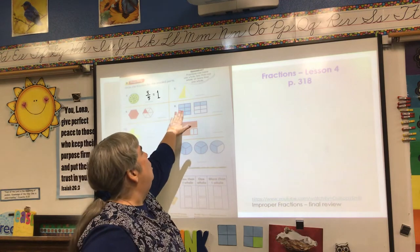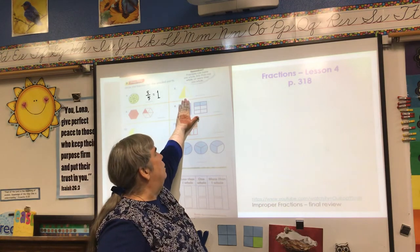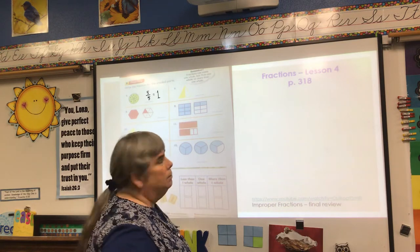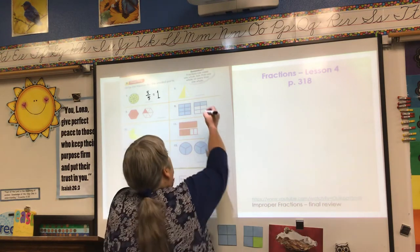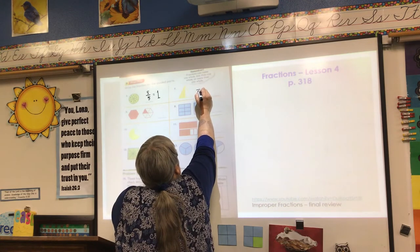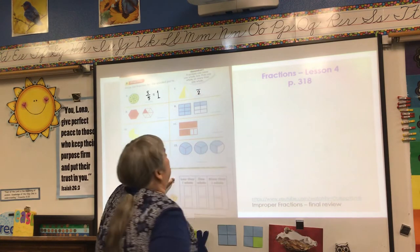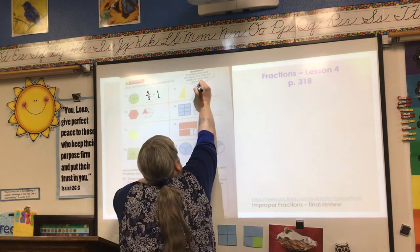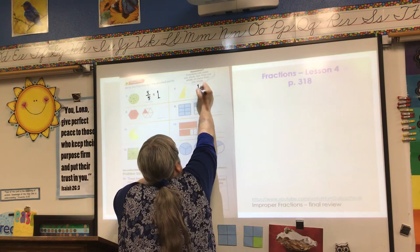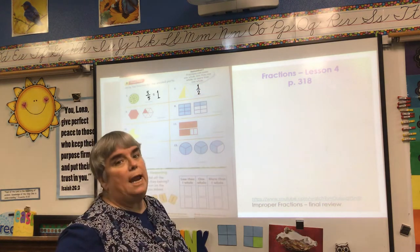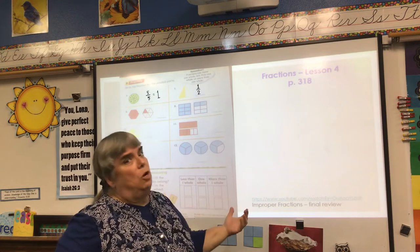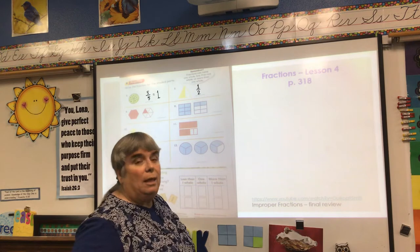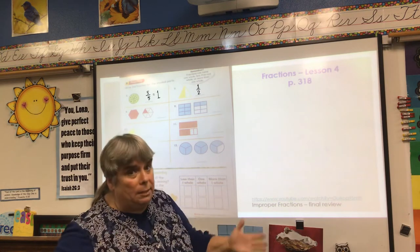Number seven: we have a triangle split into two, but only the left side is shaded yellow. So I know it's split into two, so for my denominator I'm going to put the number two. And because only one part is shaded, I'm going to put the number one. We would read that as one half. One half is not equal to one whole — if it was two halves, that would be a different story.